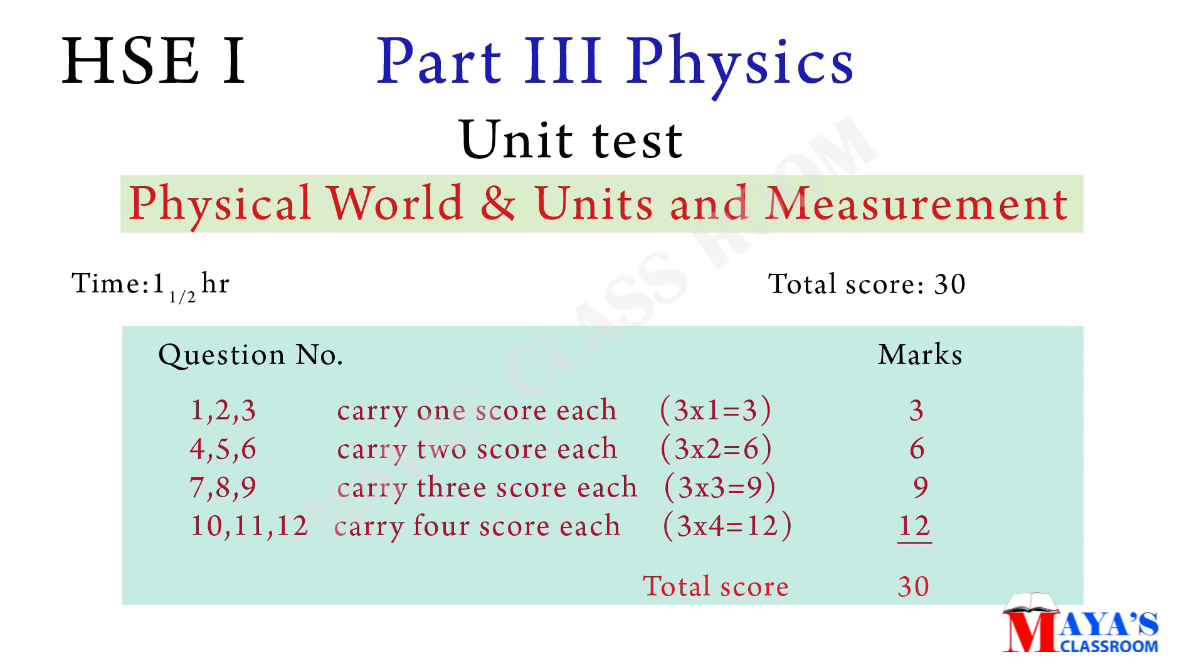Where is the mark? There are twelve questions. Questions one, two, three carry one mark each, that's three marks. Questions four, five, six carry two marks each, that's six marks. Questions seven, eight, nine carry three marks each, that's nine marks. Then questions ten, eleven, twelve carry four marks each, the total is twelve. The total marks is thirty.